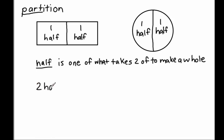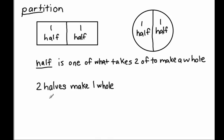Whenever we want to make a word that ends in A-L-F plural, we get rid of the F, replace it with a V, and add ES. So we have two halves that equal one whole.